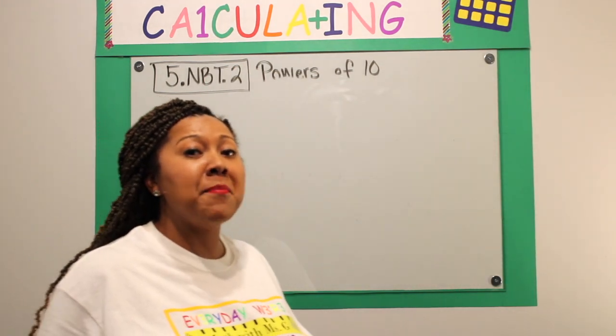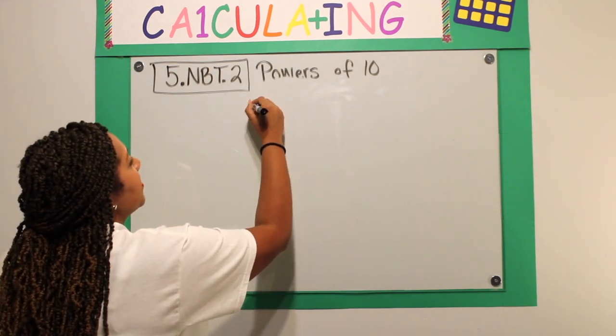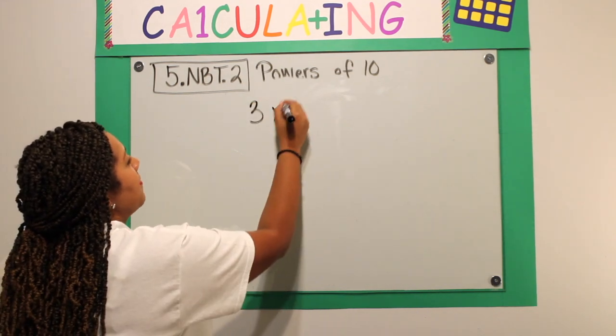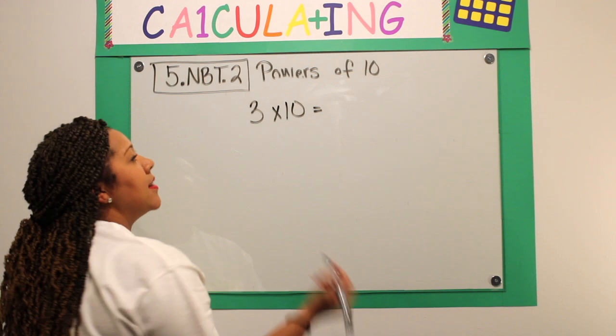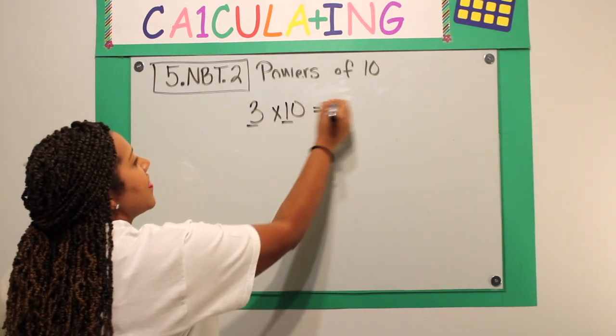When multiplying by patterns of 10, let's go ahead and check out these patterns. If I have the number 3 and I multiply 3 times 10, I'm doing 3 times 1 is 3. Add that one zero.